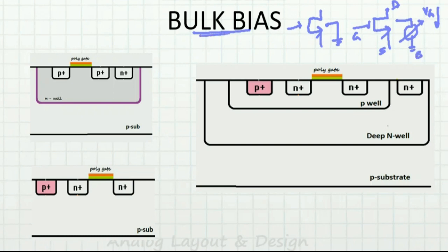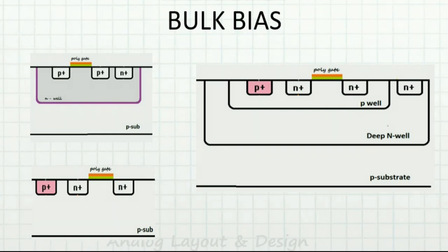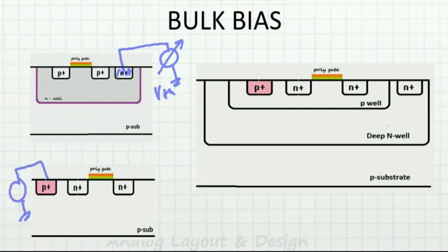Because of this, the bulk is also called the back gate. The same thing can be done in PMOS as well — I change the bulk voltage and VTH changes. Similarly for NMOS: the bulk is normally connected to ground, but I can apply a variable voltage here. When I change this voltage, depending on forward bias or reverse bias, the VTH of the transistor will change.